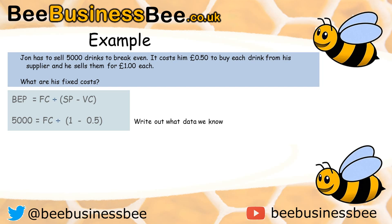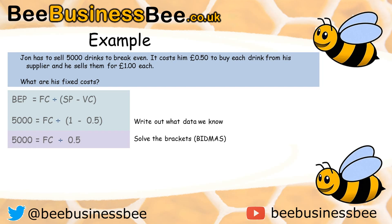As you can see, I've written my breakeven point equals my fixed cost divided by my selling price minus my variable cost in brackets, or my contribution. I know my breakeven point is 5,000. I don't know my fixed cost, I'm going to leave it as FC. But I know that my selling price is £1 and I know that 50p is my variable cost. We solve the brackets: 1 minus 0.5 gives us 50p. So we're now left with 5,000 equals a fixed cost divided by 50p.